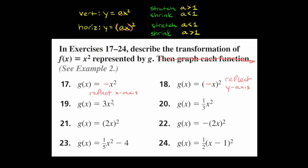Problem 19: g of x equals 3x squared. No parentheses around the number and the x, so we're dealing with something vertical — vertical stretching or shrinking. To tell which, look at the a number, which is 3. For vertical: it's a stretch if the number is bigger than 1, and a shrink if it's smaller than 1. Since 3 is bigger than 1, this is a vertical stretch by a factor of 3.